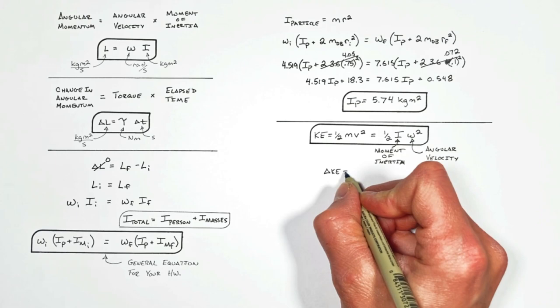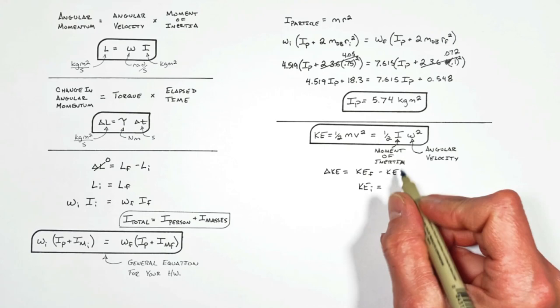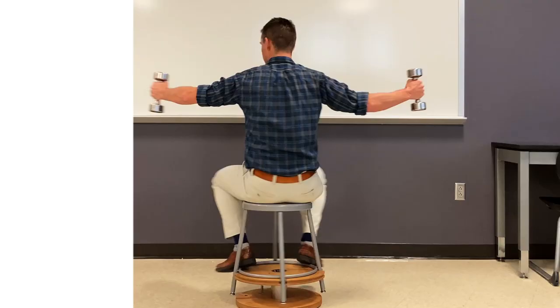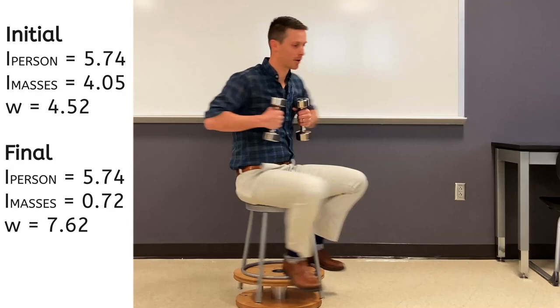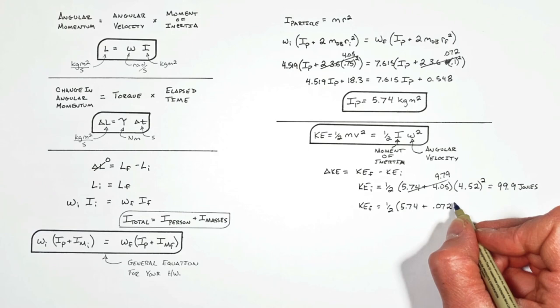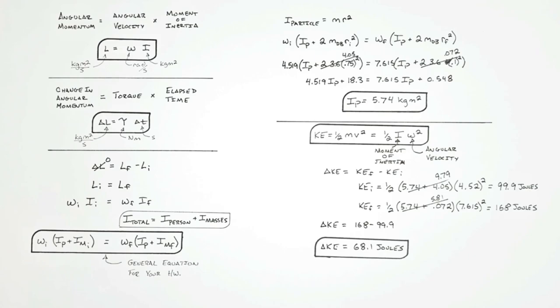So now let's plug in our known values for both inertia and angular velocity to look at just how much the kinetic energy changes. Plugging in the known inertia of both myself and the spinning masses, as well as the initial angular velocity, we find there's an initial kinetic energy of everything spinning on the stool of 99.9 joules. Now as I pull my arms in, my inertia really doesn't change, but the inertia of those spinning masses changes. And doing the calculation, we find in the end there's 168 joules of kinetic energy. This means as I pulled my arms inward, the kinetic energy of everything rotating increased by 68.1 joules. So the kinetic energy increased. But unfortunately, that's where most people stop discussing this problem.